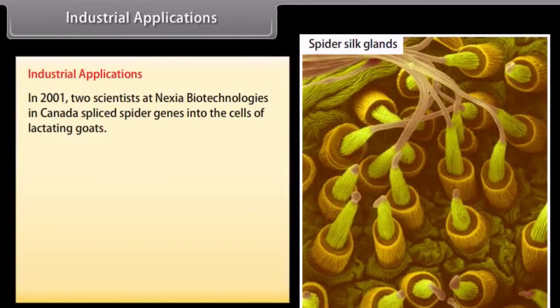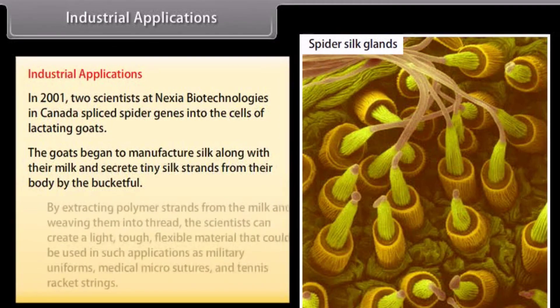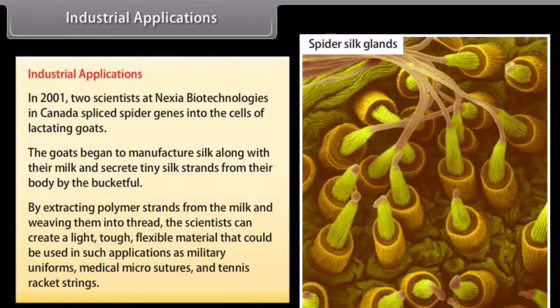Industrial applications. In 2001, two scientists at Nexia Biotechnologies in Canada spliced spider genes into the cells of lactating goats. The goats began to manufacture silk along with their milk and secrete tiny silk strands from their body by the bucketful. By extracting polymer strands from the milk and weaving them into thread, the scientists created a light, tough, flexible material that could be used in applications such as military uniforms, medical micro-sutures, and tennis racket strings.